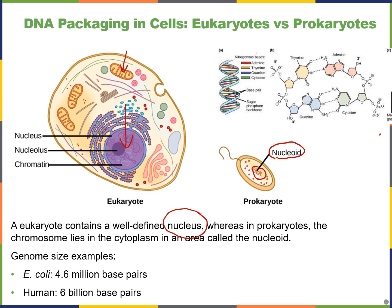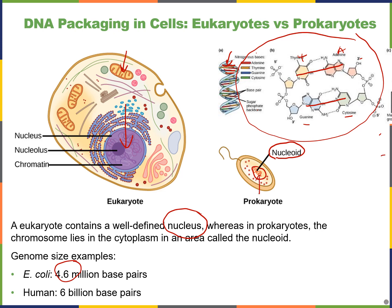If we look at the size of a typical prokaryotic versus eukaryotic genome, E. coli have 4.6 million base pairs. Each rung of the ladder of the DNA double helix is one base pair — for example, A paired with T is one base pair, and G paired with C is a second base pair. Humans have 6 billion base pairs in our diploid somatic cells, and 3 billion in our haploid sperm and egg cells.